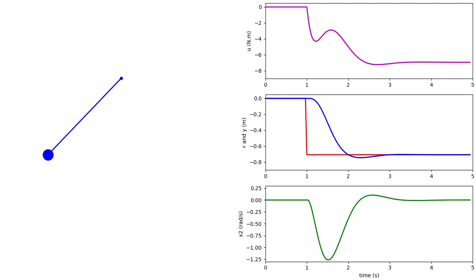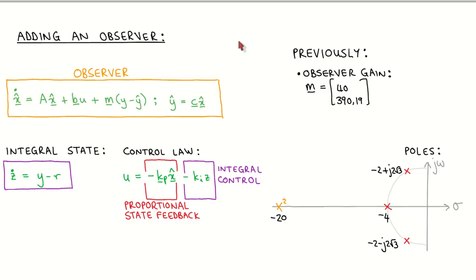At this point we have still made the unrealistic assumption that the plant states are available for feedback. Let us now relax this assumption and add an observer. Since the plant states are not known, we need to add an observer to estimate the plant states. The usual observer equations define the observer, where we design the observer gain to place the observer poles in desired locations. With the observer, the definition of the integral state is unchanged, but in the control law we now use the estimated plant states for proportional state feedback. Since the integral state z is known, we do not need to estimate it — we therefore only estimate the plant states.